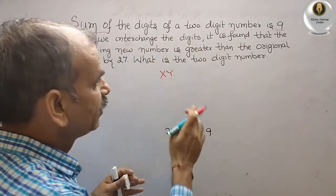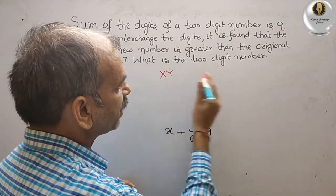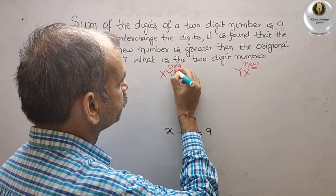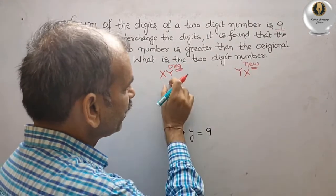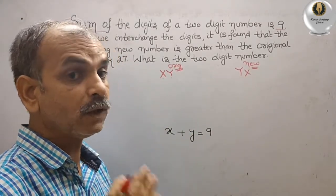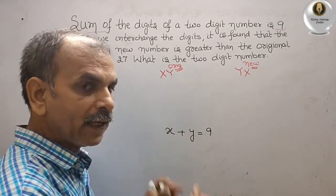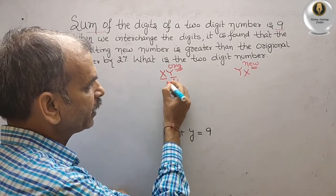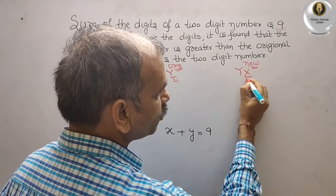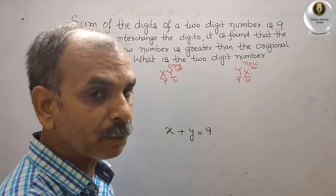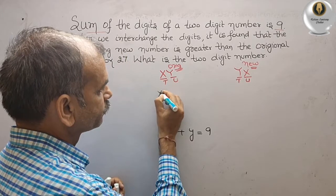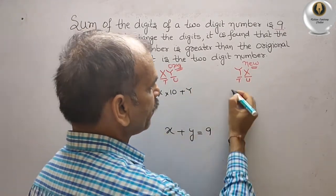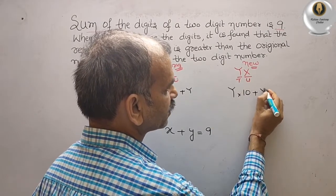When we interchange the digits, this is your new number and this is your original one. In the original number, Y is in the units place and X is in the tens place. So in the new number, X becomes the units digit and Y becomes the tens digit. The original number in expanded form is 10X plus Y, and the new number is 10Y plus X.